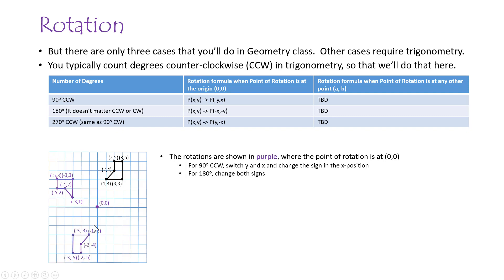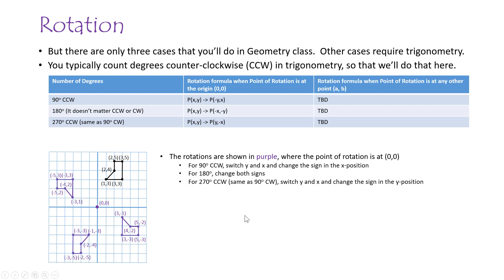For 180 degrees, it's straightforward: you don't switch the X and Y, you just change both signs to negative. For 270 degrees counterclockwise — same as 90 clockwise — you switch the X and the Y, but this time you change the sign of the Y position, the second position in the ordered pair.